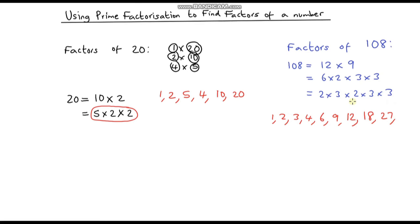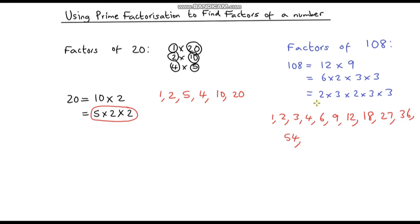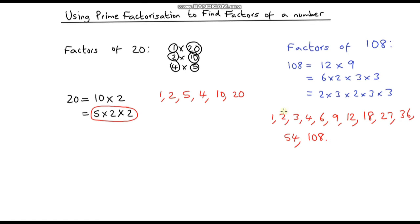We could also have 3 times 3 times 3 which is 27. Now let's look at the four-number combinations: 2 times 2 times 3 times 3 is 36, and 2 times 3 times 3 times 3 is 54. Finally, multiplying all of them together — 2 times 2 times 3 times 3 times 3 — gives us 108. These are all of our factors. By going through every combination, I know I haven't missed any, unlike simply listing where I might have missed 27 or 18.